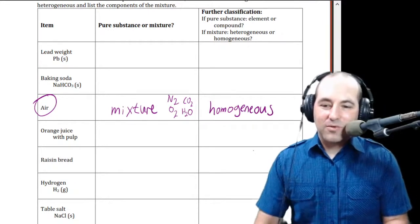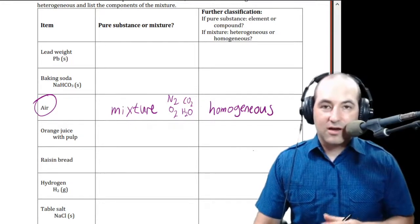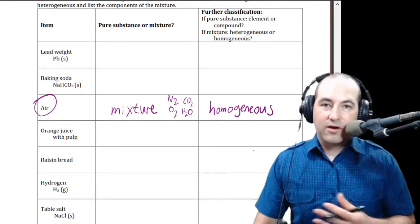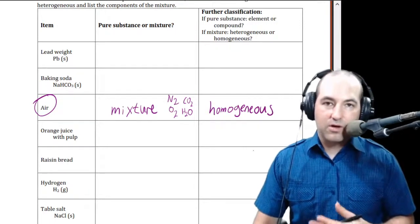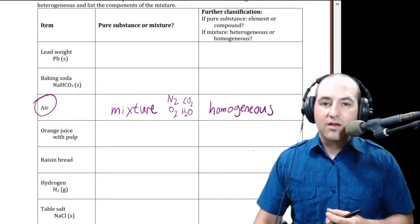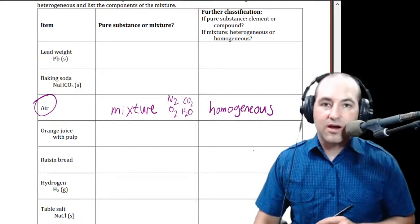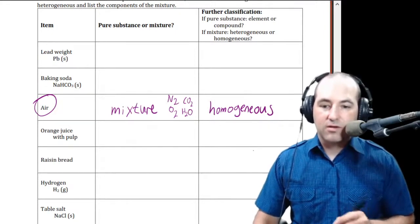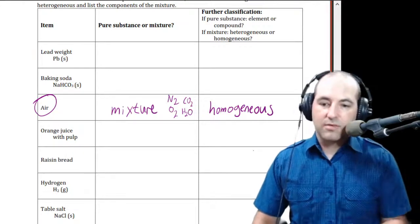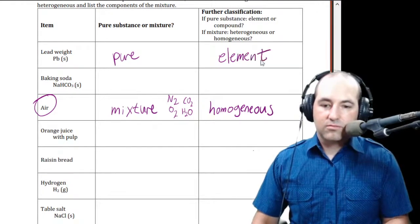A lead weight with that formula — first of all, is it a pure substance or mixture? The definition has to do with whether or not it can be broken down physically or if it has to be broken down chemically. Can you separate the components without changing their identity? If so, it's a mixture. This is clearly just one element, so that's a pure substance and an element — it's only made of one type of atom: lead atoms.